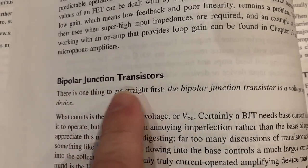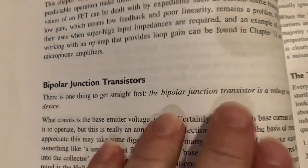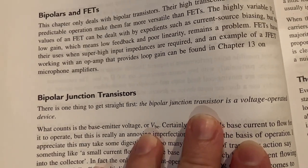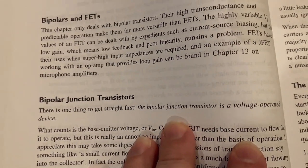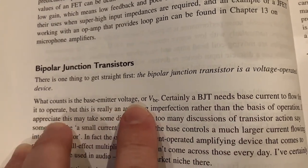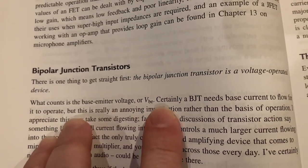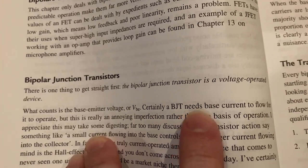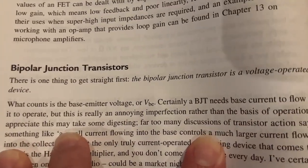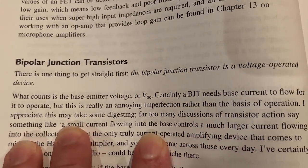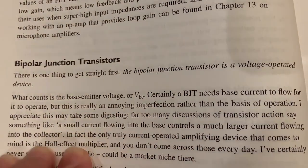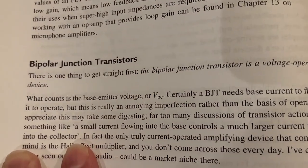Bipolar junction transistors. There is one thing to get straight first. The bipolar junction transistor is a voltage-operated device. What counts is the base emitter voltage, or VBE. Certainly, a BJT needs base current to flow for it to operate, but this is really an annoying imperfection rather than the basis of operation. I appreciate this may take some digesting.